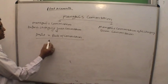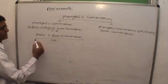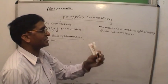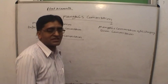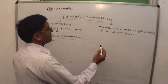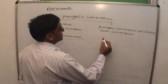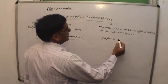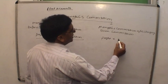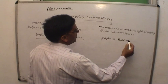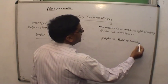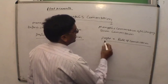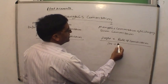If managers commission is calculated after charging such commission, then the formula to calculate the commission is: profit multiplied by rate of commission, divided by hundred plus rate of commission.